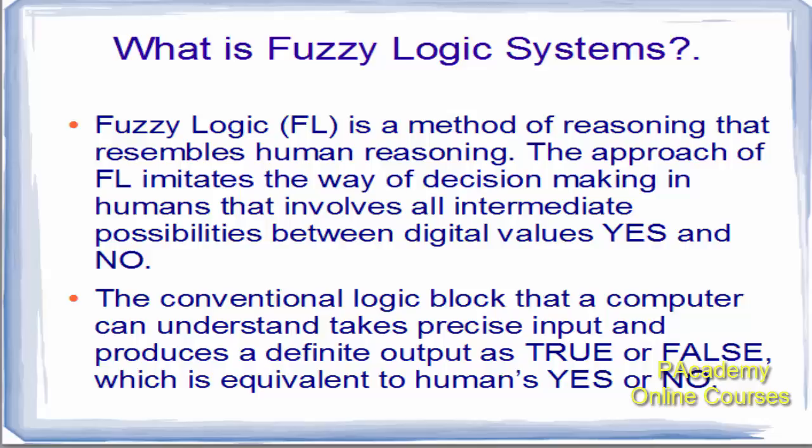The conventional computer thinks in a way it can understand — it takes precise input and produces a definite output as true or false, which is equivalent to a human's yes or no. So a conventional computer only thinks in the direction of yes or no, but a fuzzy logic system considers all the possible outcomes between yes and no while making a decision.